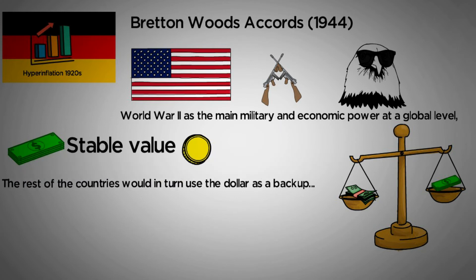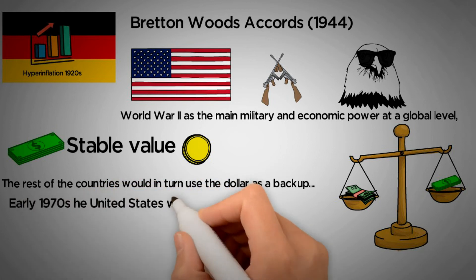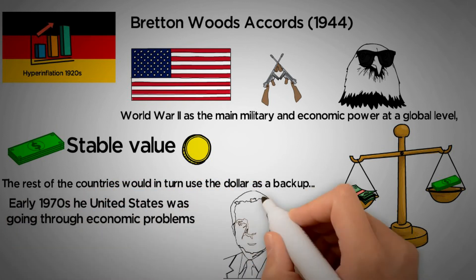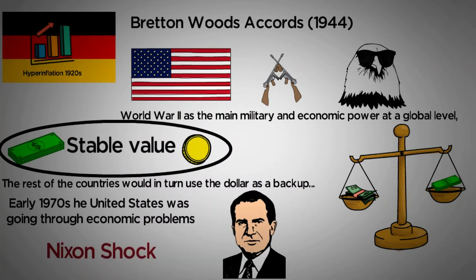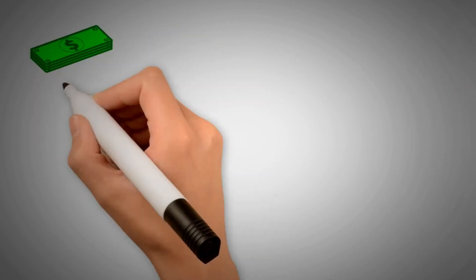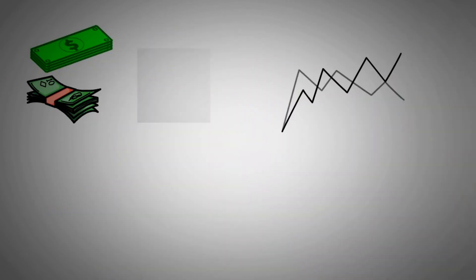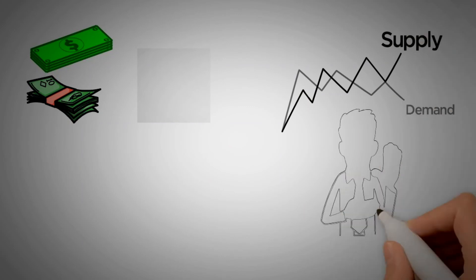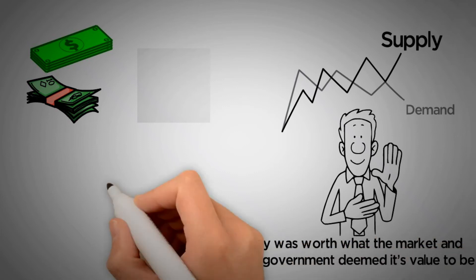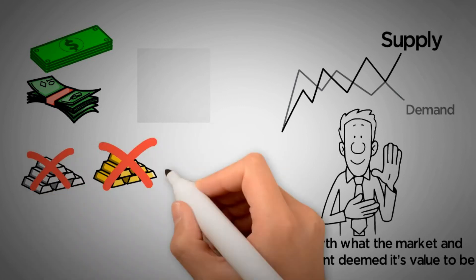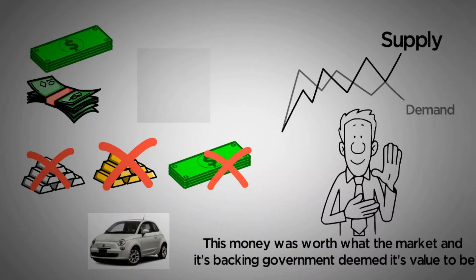The rest of the countries would in turn use the dollar as a backup. However, the economic problems that the United States was going through in the early 1970s caused the then-American president, Richard Nixon, to decide in 1971 to end this system 30 years after its creation, as part of what would become known as the Nixon shock. Thereafter, the dollar, and with it most other currencies, would abandon the gold standard and would fluctuate according to the supply and demand of the market, with no other support than the promise that this money was worth what the market and its backing government deemed its value to be. This type of money — not backed by gold or other precious metal, or by another currency such as the dollar — is known as fiat currency. Not like the car.